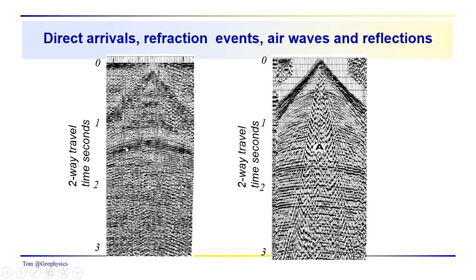And usually from an interpretation point of view, we're interested in the reflection data. Not always, but for the most part. These events here are probably refraction, critical refraction events of some sort from multilayered subsurface. I don't really think we can see the direct arrival here in this particular record. Perhaps over here, but again, these look like they might be critical refractions.